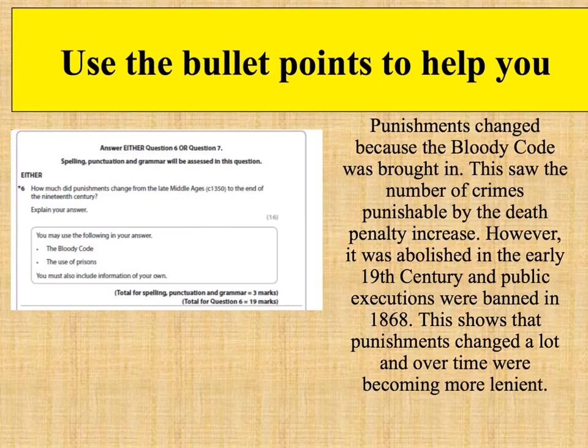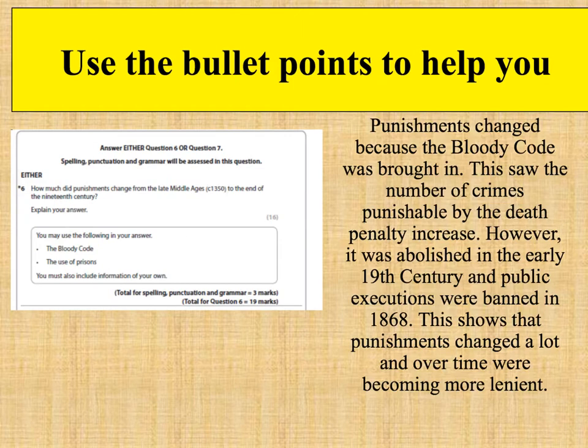When doing these essay questions, you'll often be given bullet points to help you, and it's really important to use your own knowledge to add to those bullet points. In this example, one of the bullet points gives you the idea of the Bloody Code. You can see on the right-hand side an example of how to use that information, but you also add to it using your detailed own knowledge. Then crucially — 'this shows that punishments changed a lot and over time we were becoming more lenient' — that is a good example of explanation and evaluation, which is really important for getting good marks.